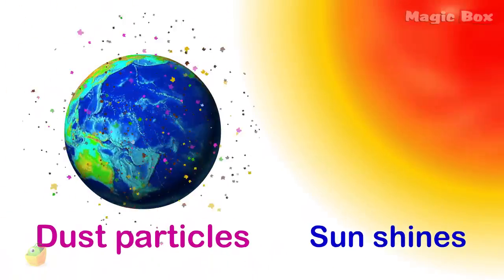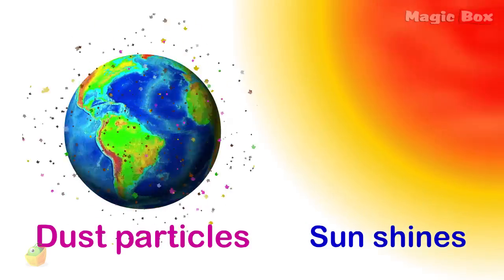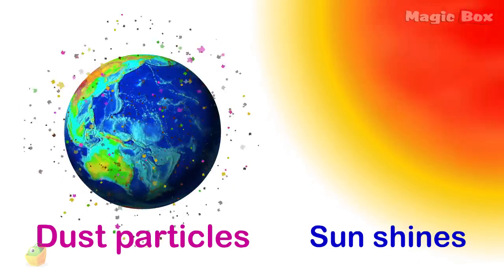As the light from our sun shines into the atmosphere, most of the colors are able to reach the Earth's surface uninterrupted.